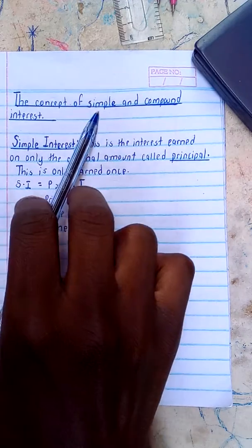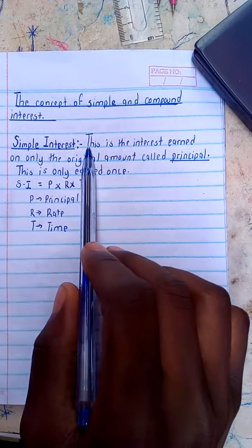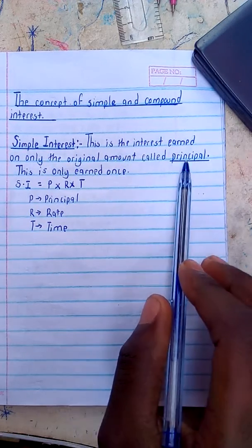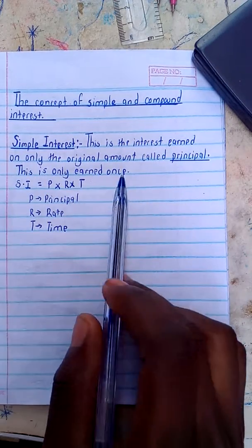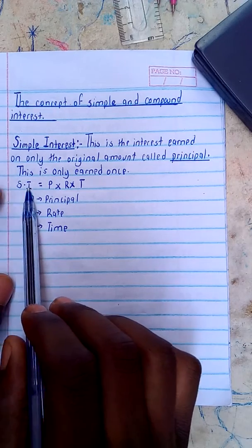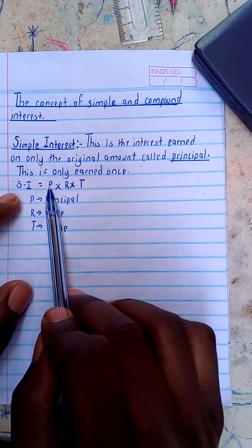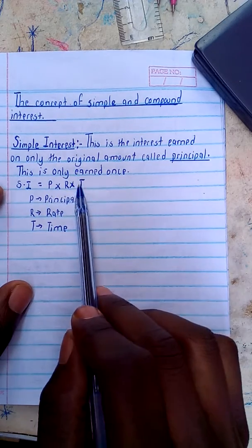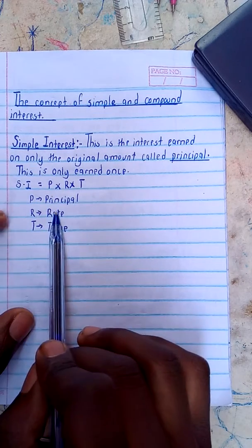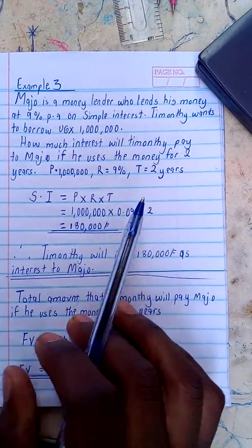Moving on to the concept of simple and compound interest. Simple interest is the interest charged only on the original amount, called the principal. The formula for simple interest is: SI equals P times R times T, where P is the principal, R is the rate, and T is the time.